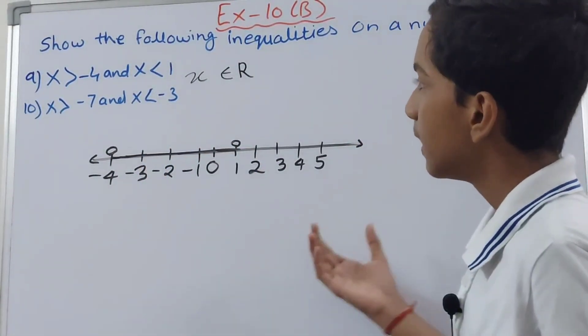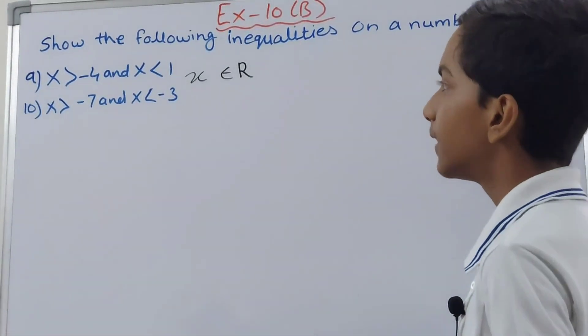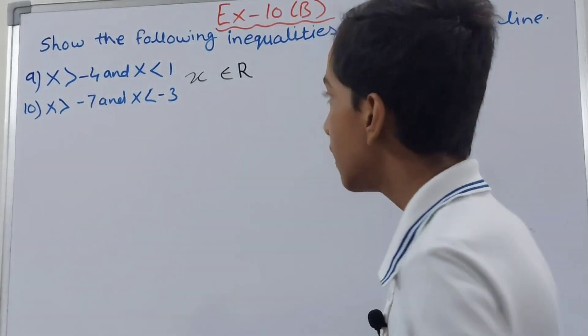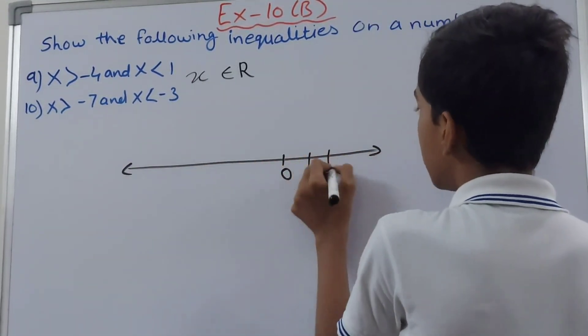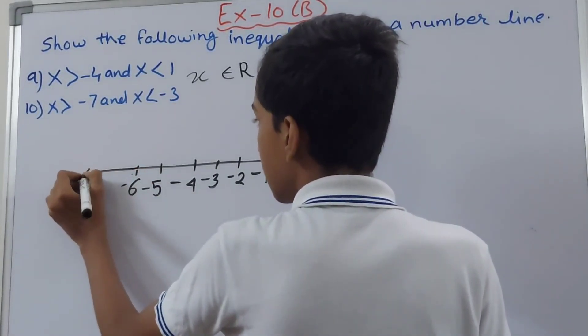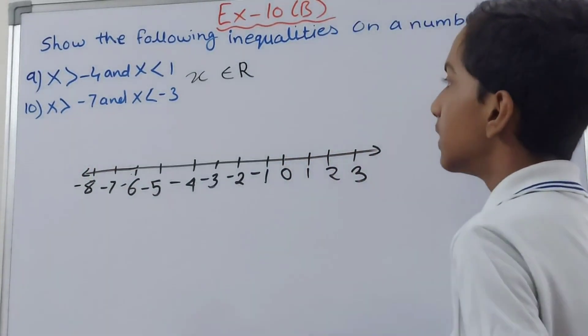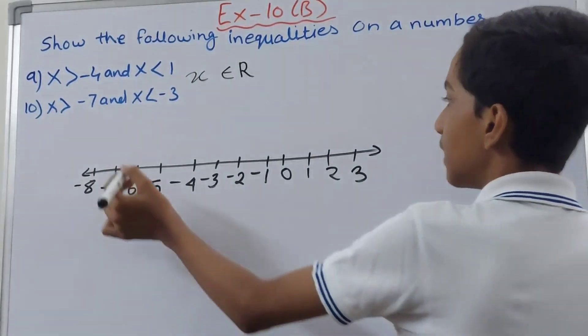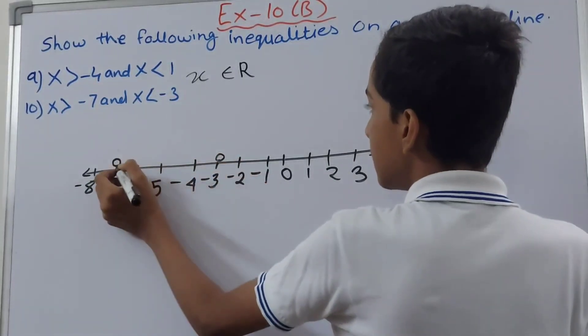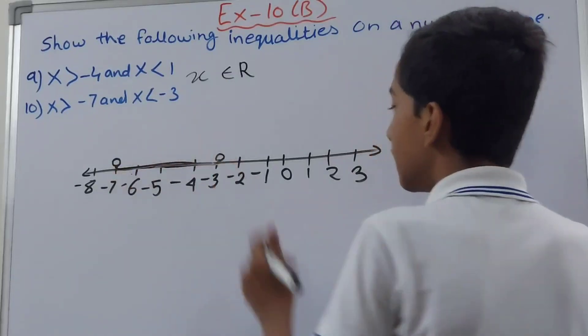This is how we highlight it. Let us move on to the next inequality. Now we move on to the tenth part. This is x is greater than minus 7 and x is less than minus 3. So again we draw the number line, and we extend it a little more: minus 7, minus 8. Now you see here that this is greater than minus 7, so again we put an open circle here, and it is less than minus 3, so another open circle at minus 3, and we highlight this much area. We basically highlight it like this. And this is how we have plotted this on the number line.